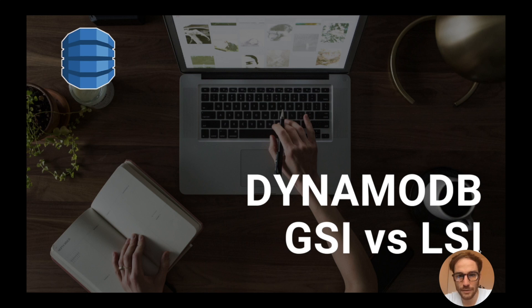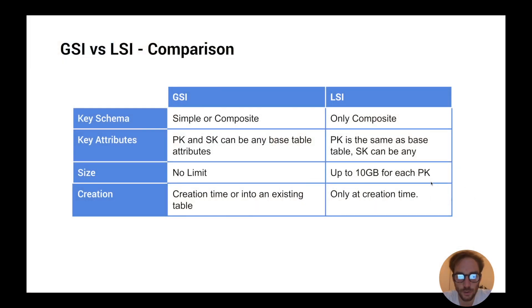Hello everyone and welcome to another video about DynamoDB indexes. In particular, I want to do a comparison between global and local secondary indexes. First, let's see a quick comparison between them. The first feature to compare is the key schema. A global secondary index can have simple or composite keys — just the partition key, or partition key and sort key as well.